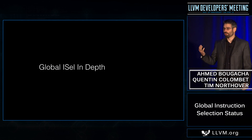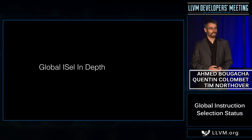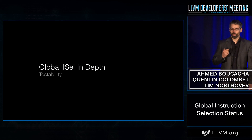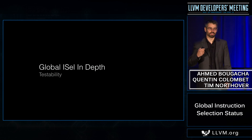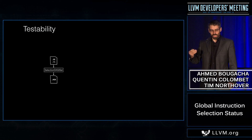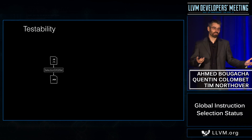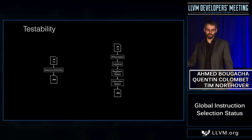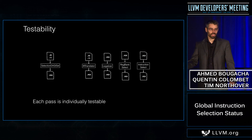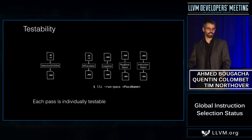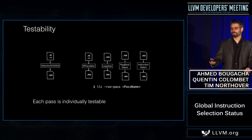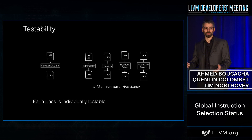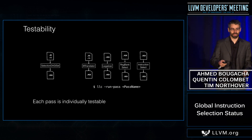Now let's dive into a key design goal of GlobalISel: testability. We wanted GlobalISel to be much easier to test and develop than SelectionDAG. With SelectionDAG, you give it LLVM IR and look at the end result — that's pretty much all you can do. With GlobalISel, since each phase is its own pass, you can test each pass individually using LLC with the -run-pass option and the name of the pass. This is possible thanks to Alex's work on the machine IR format, which is now serializable.